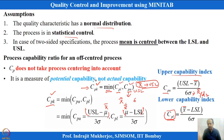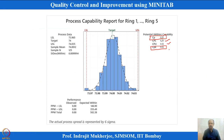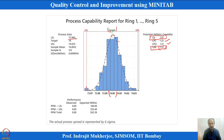From the MINITAB output for the piston ring example, CP = 1.17 and CPK = 1.13 (minimum of CPL and CPU). The histogram shows the overlapping normal distribution with target at 74, USL at 74.035, and LSL at 73.965. Observed performance shows no actual data points outside the specification, but using the normality assumption and Z-conversion, the expected within PPM is approximately 502.